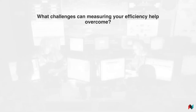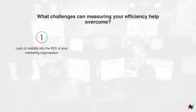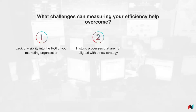I want to think about the challenges we can expect to overcome by having a clear understanding of what your operational efficiency actually looks like. The first and most obvious is a lack of visibility into the ROI of your marketing organisation. By understanding exactly how efficient each stage of your production process is, we can put a tangible dollar figure on each of those elements. It can also allow you to uncover inefficient processes that have existed historically but which don't fit your current strategy, and help you remove inefficient or outdated steps and procedures.